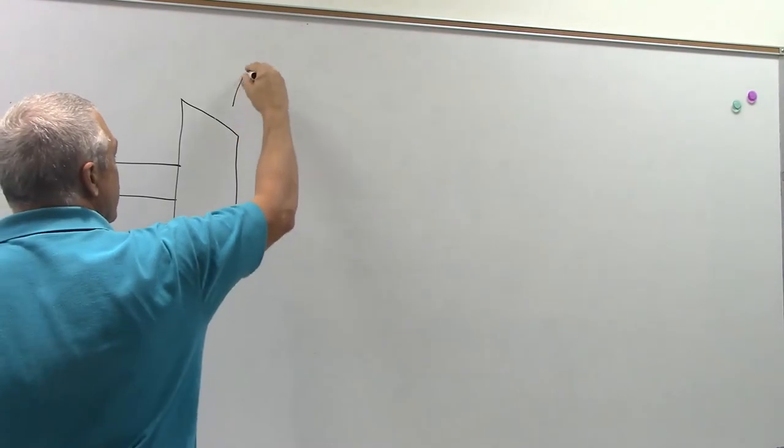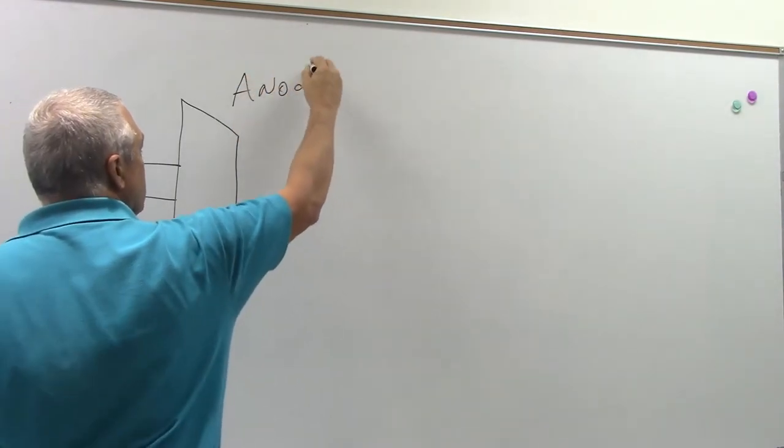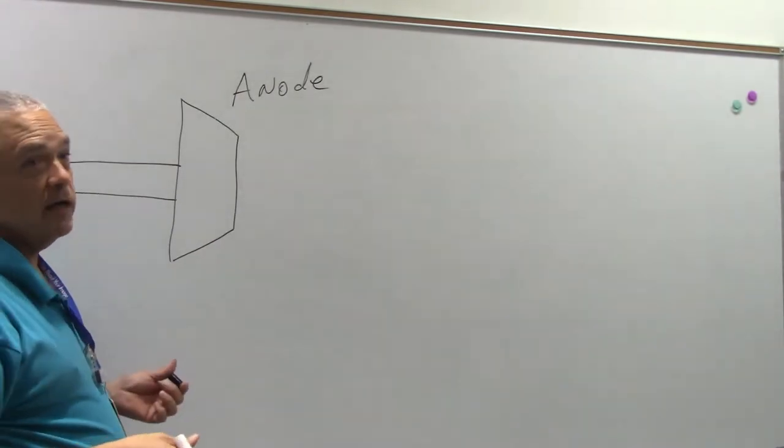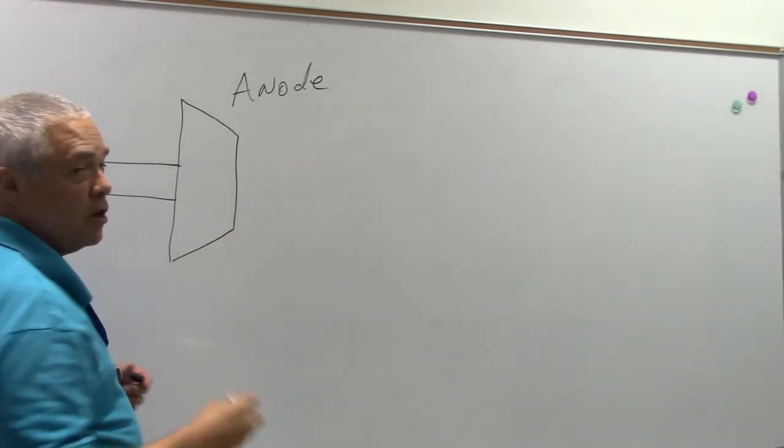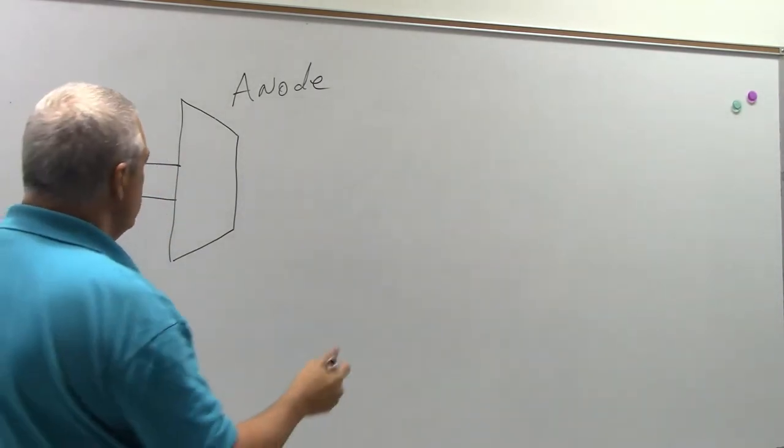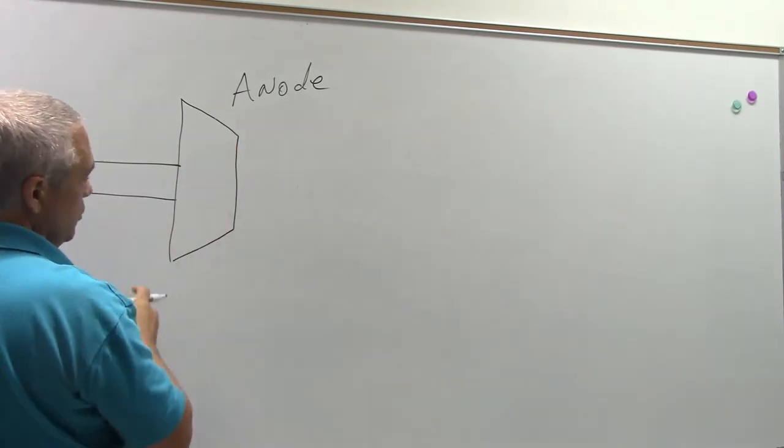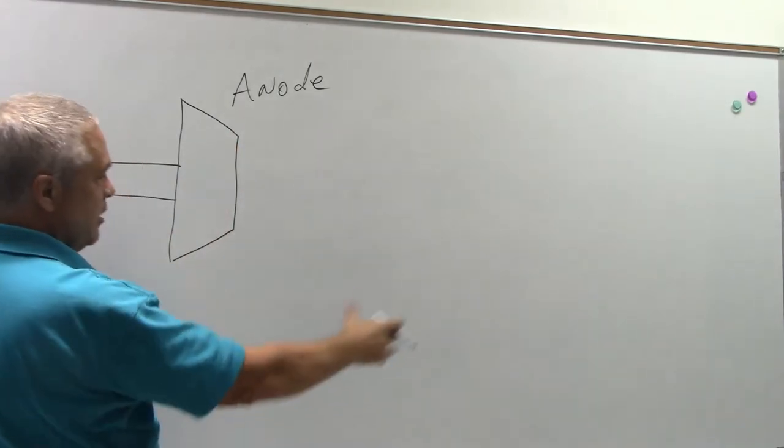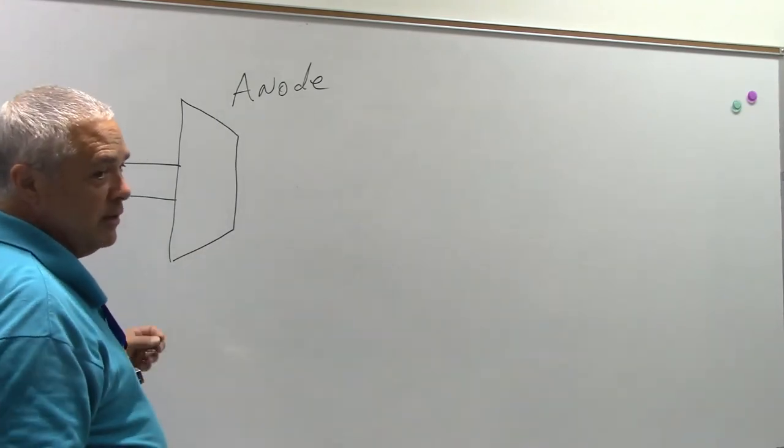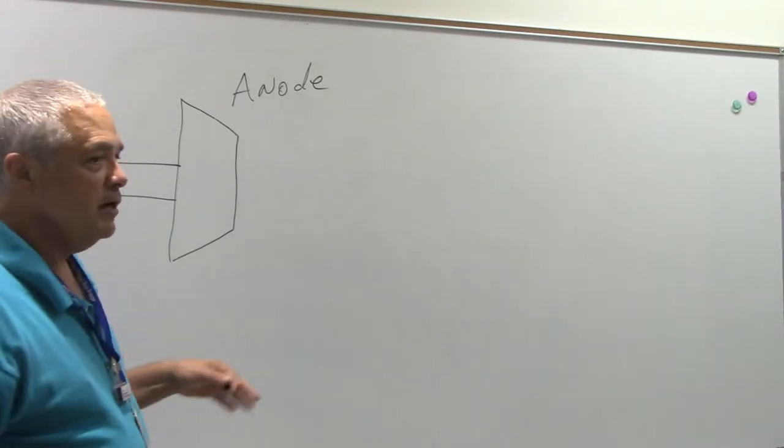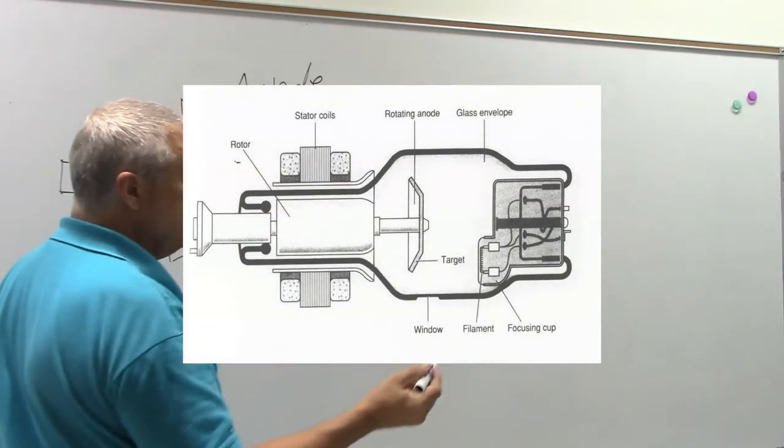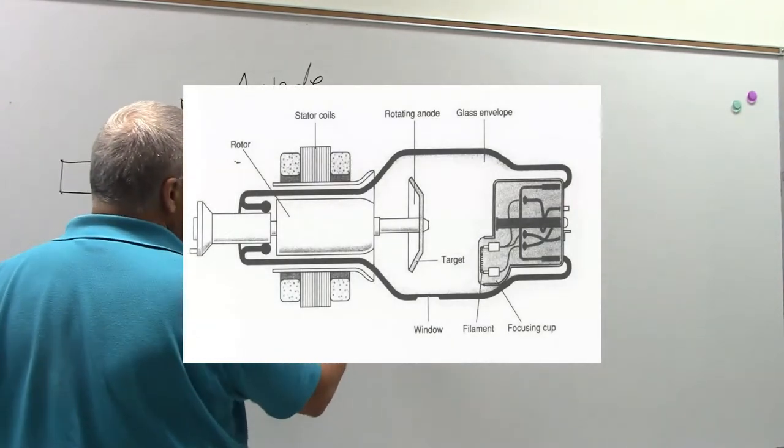And I'm going to label this the anode. Okay, anode, cathode are things we use in X-ray. The anode is always going to be our positively charged area inside the X-ray tube. Okay, so you'll have to imagine that there's an X-ray tube surrounding this thing. I'm not going to draw that today. We'll take a look at some X-ray tube diagrams later. Or, who knows, maybe I'll find one that I can blend in here. I'll see what I can do. All right, so I'm going to make some drawings here.